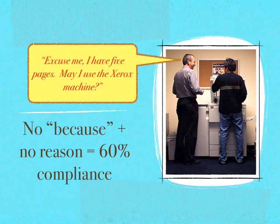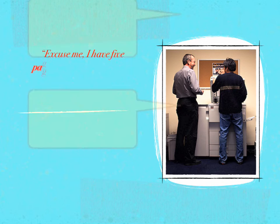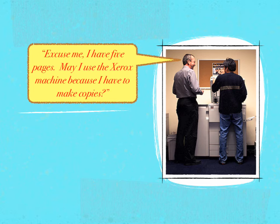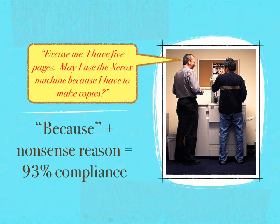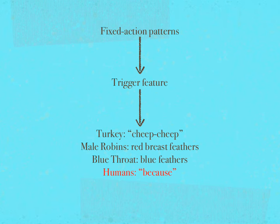Was it the content of the reason, or the mere fact that a reason was given? To determine this, a third request was given: "Excuse me, I have five pages — may I use the Xerox machine because I have to make copies?" Because plus a nonsense reason resulted in 93% compliance, even though no real reason was given and no new information was added. So we add because to the list of trigger features for human compliance.